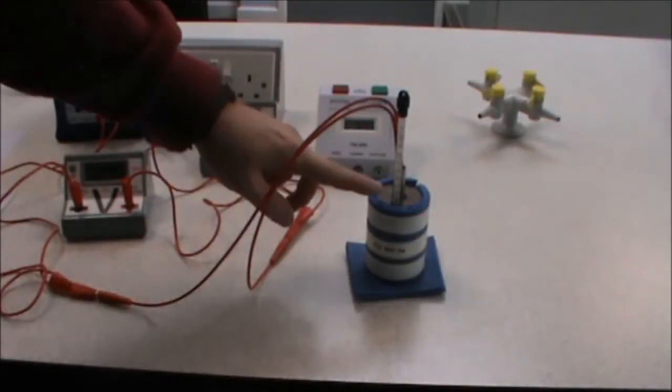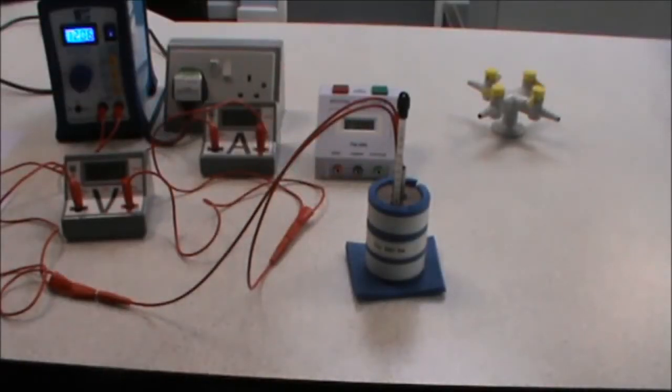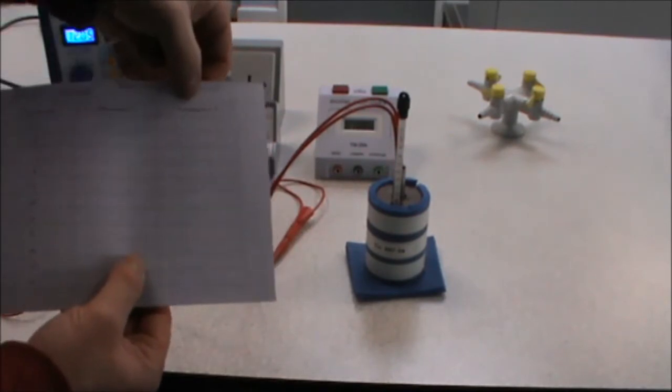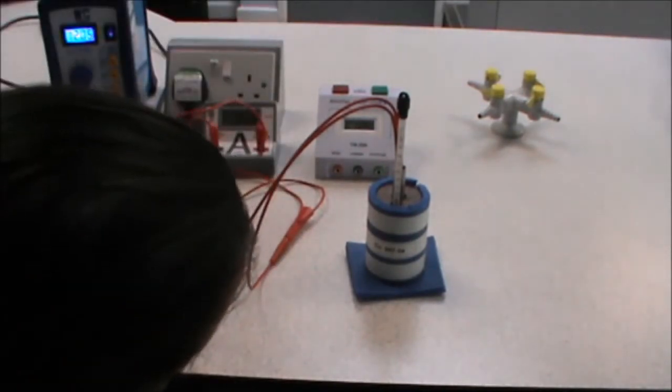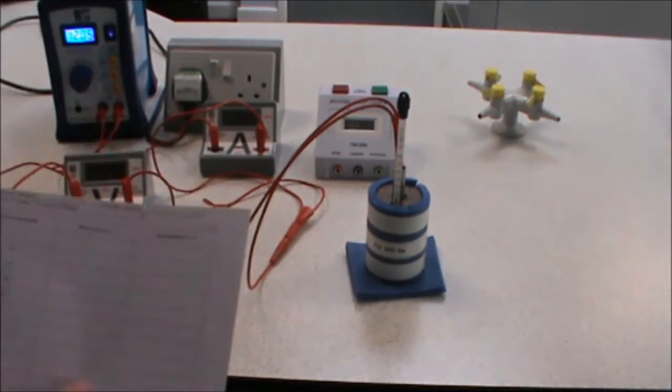Every minute, we take the temperature of the block and record it in our results table in the temperature column. After one minute, the copper block is now at 23 degrees.